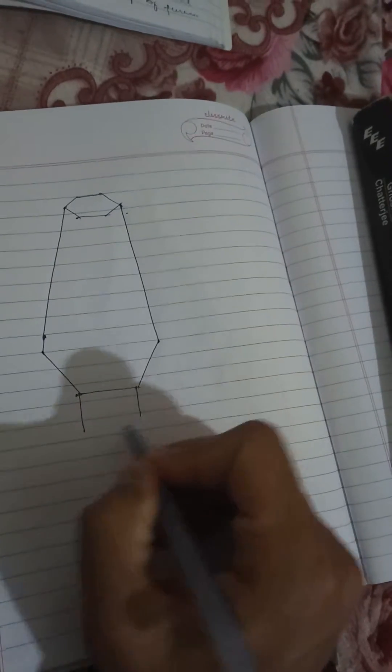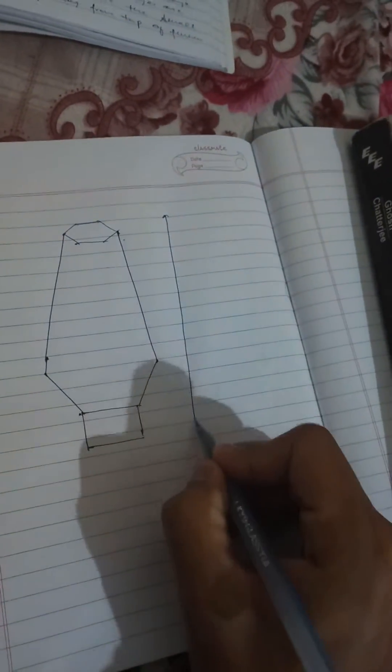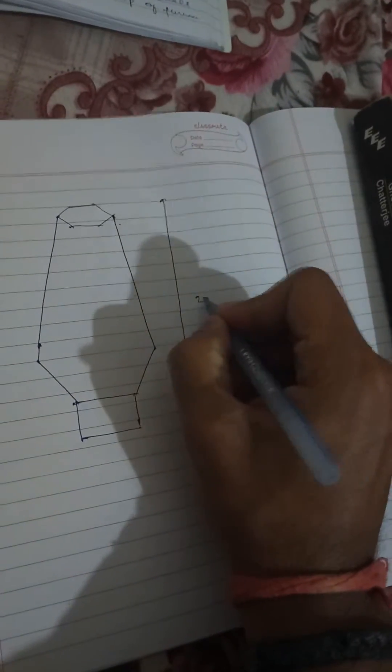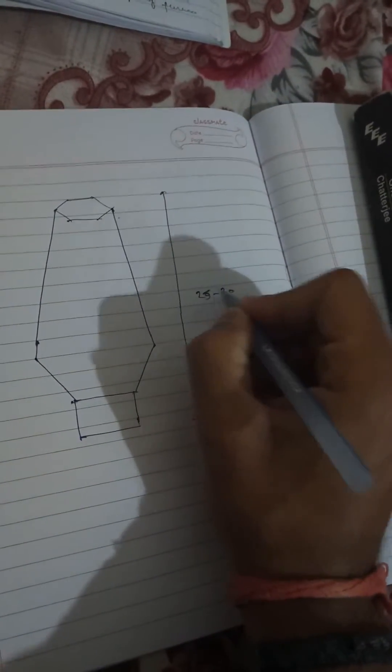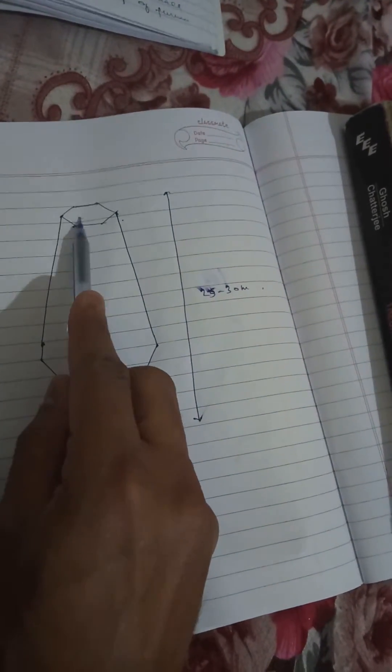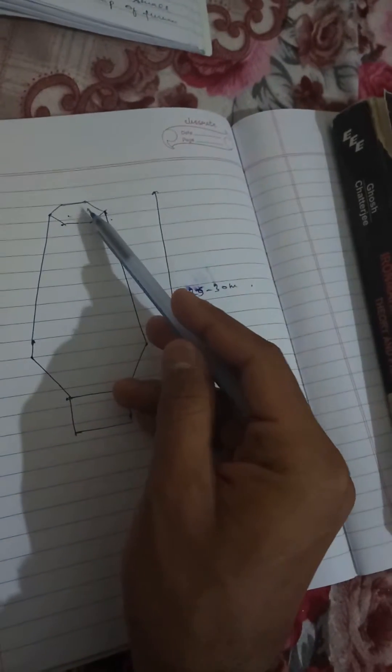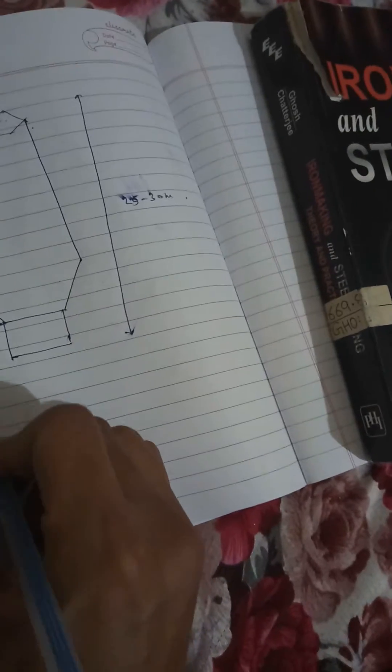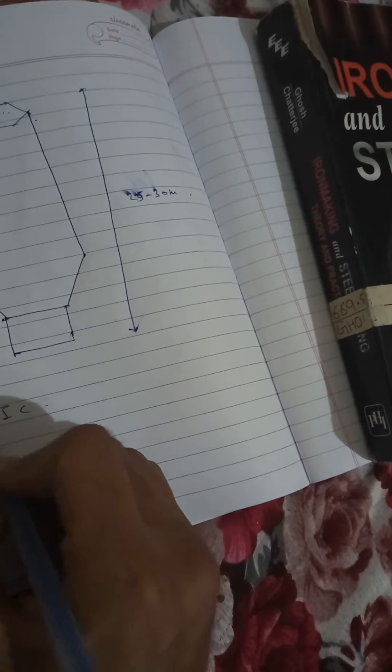This is the total height which is around 25 to 30 meters, and this is the open shell from where we put LIC, which is limestone.